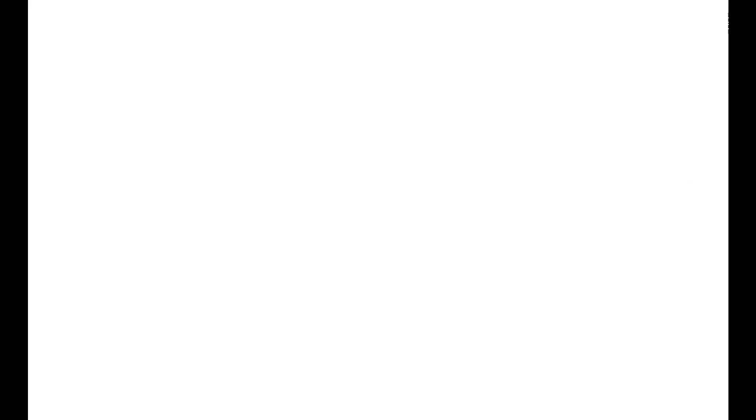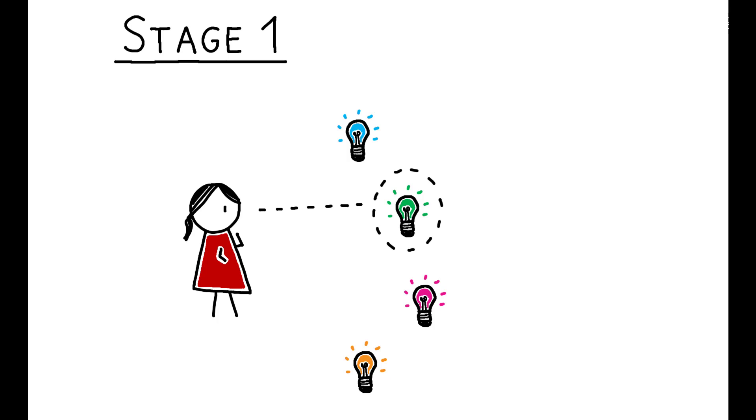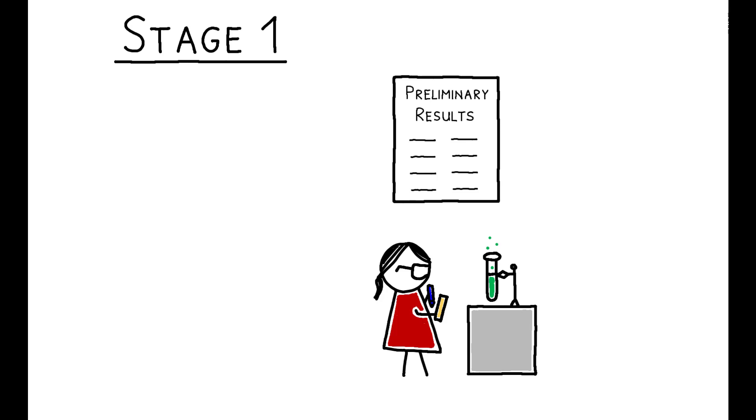To help fix ideas, consider the following simple model. Suppose the research process consists of two stages. In the first, a scientist chooses a project but must make an upfront investment in order to pursue it. The greater the level of investment, the higher the probability that she successfully starts the project and proceeds to stage two.